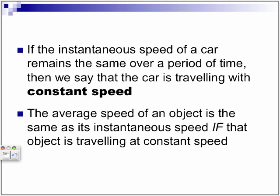Thank you for watching. If the instantaneous speed of a car remains the same over a period of time, then we say that the car is traveling at constant speed. The average speed of an object is the same as its instantaneous speed if the object is traveling at constant speed.